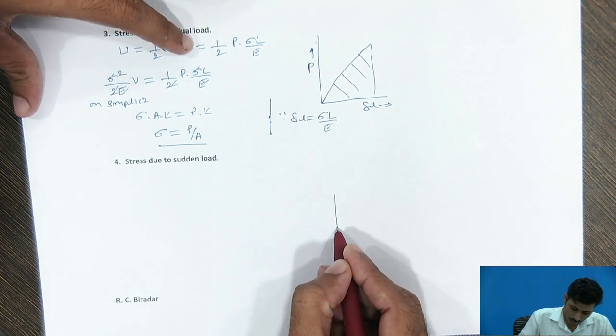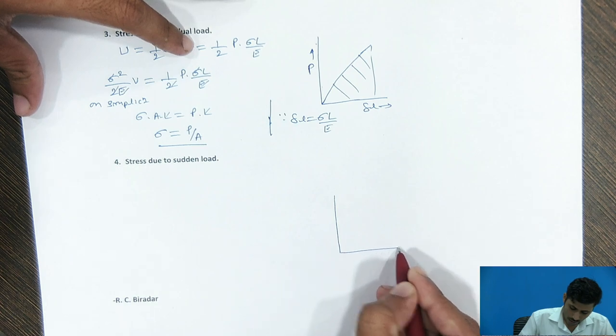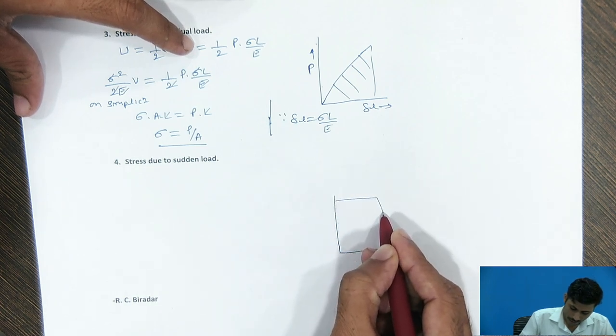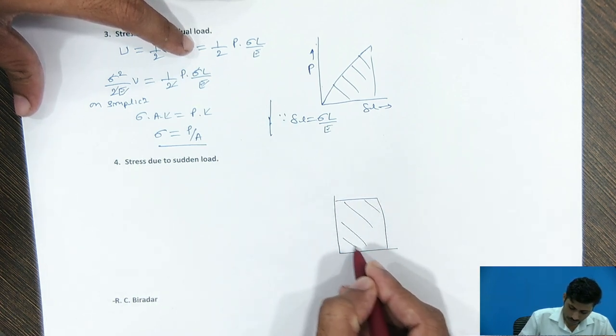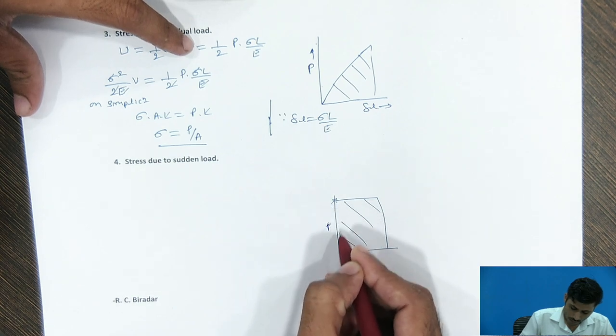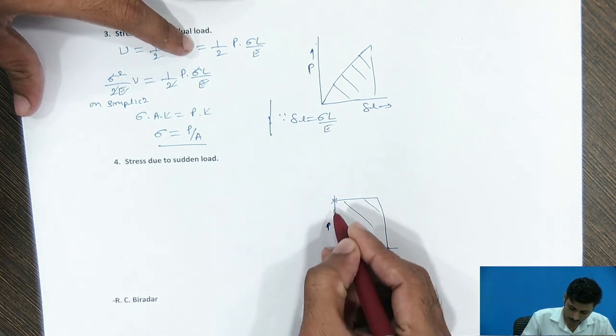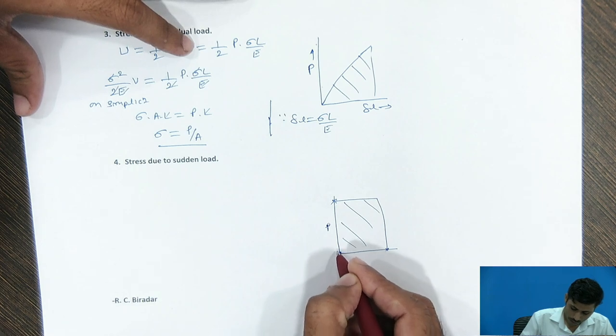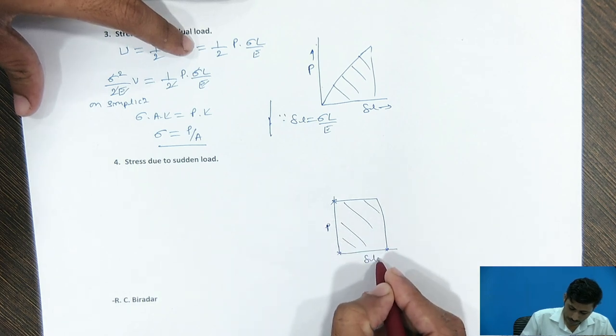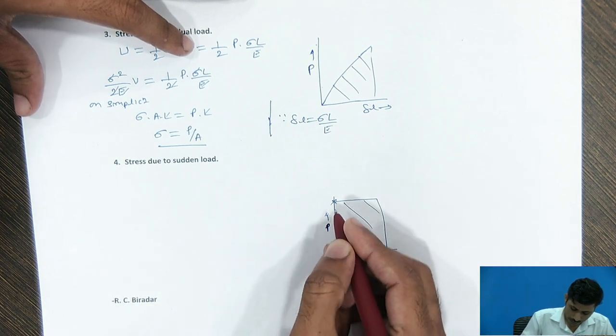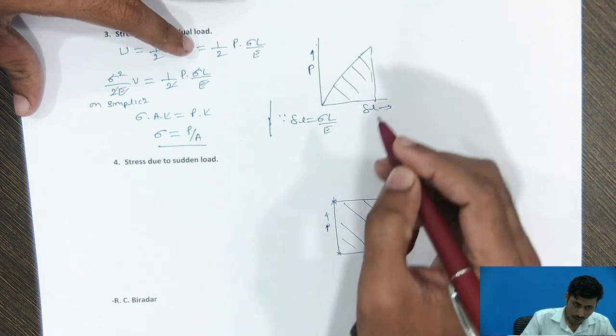Okay, for sudden type of load, the area under the curve, we can write it as this. Here, full load is taken on Y axis at a time. Because here, full load is applied at a time. Here, step by step load is applied.